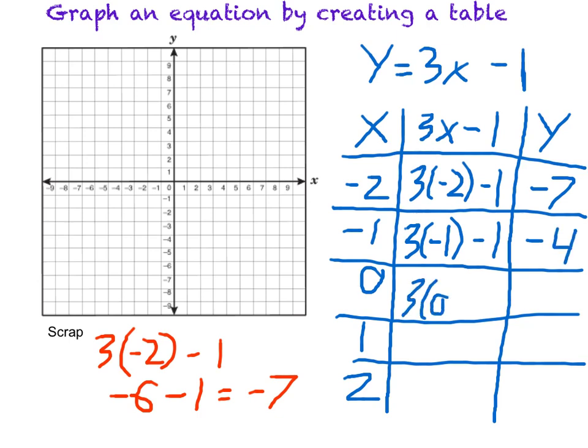3 times 0 minus 1 is 0 minus 1 or negative 1. And I can continue this for all of them. 3 times 1 minus 1 is 2. 3 times 2 is 6. Minus 1 is 5.